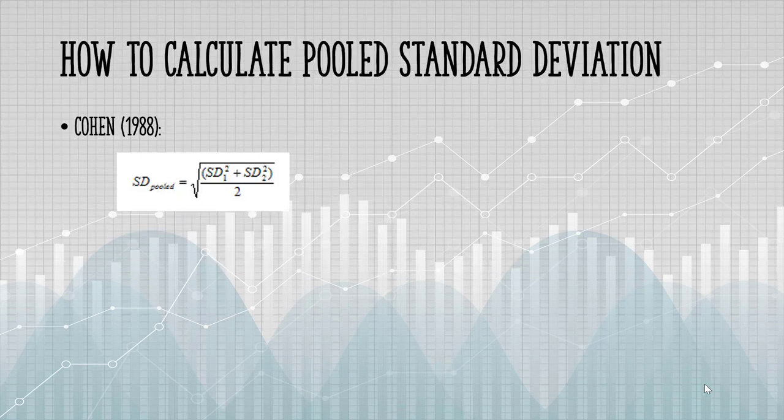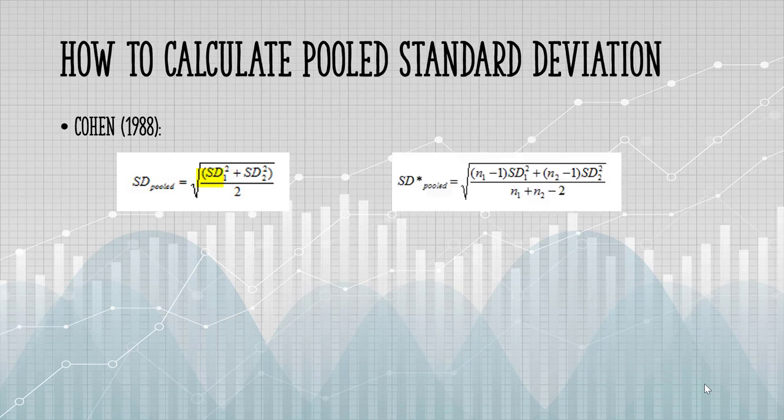You have a couple of options for calculating pooled standard deviation. The simplest is for two samples. SD-1 is the standard deviation for group 1, and SD-2 is the standard deviation for group 2.